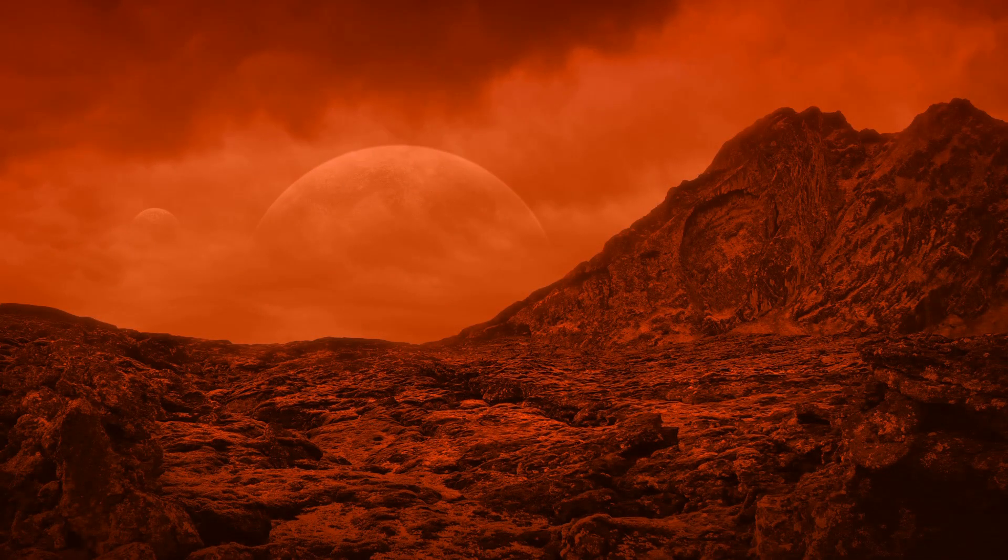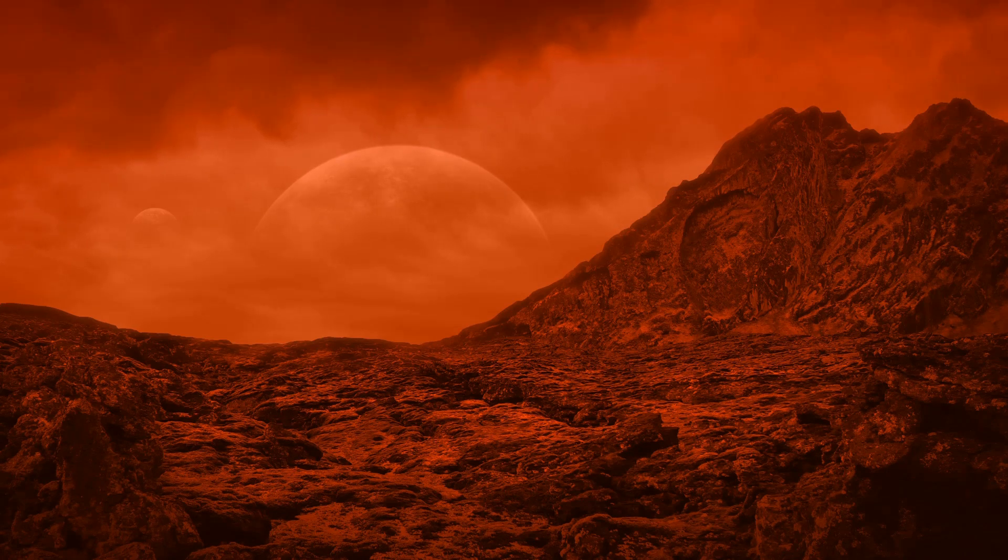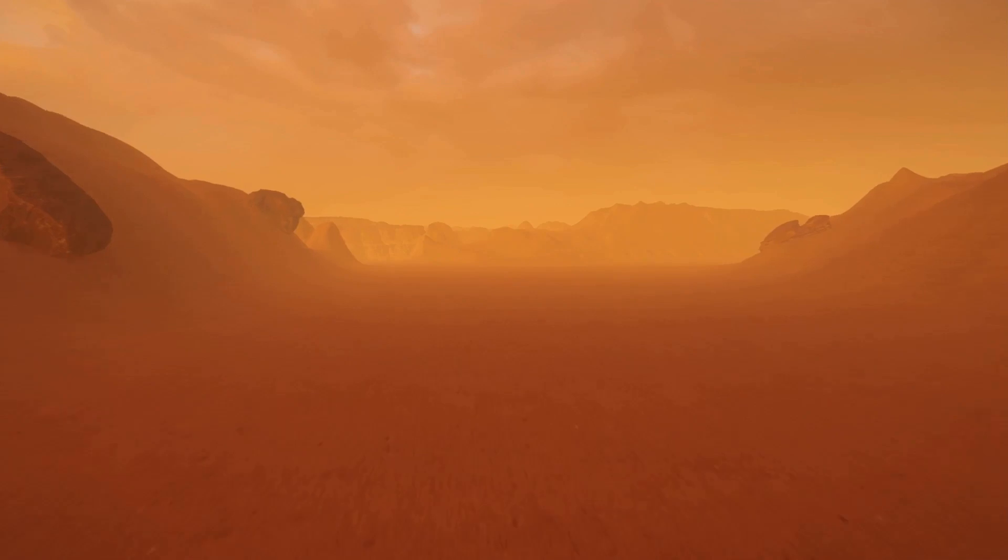Mars, the red planet, is Earth one billion years in the future after an extinction-level impact. Witnessing our celestial neighbor Mars is like peering through a cosmic time machine. It's a world that boasts valleys, mountains, weather, seasons, volcanoes and ice caps.